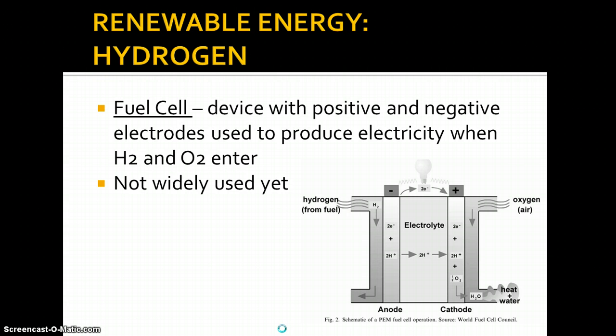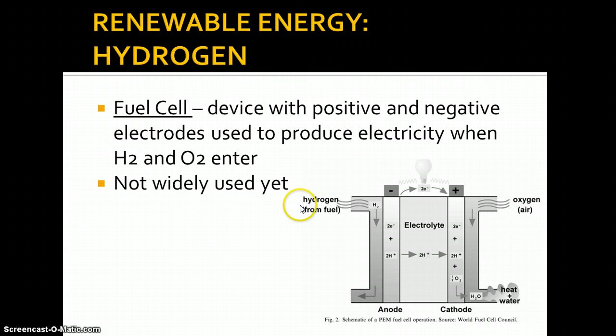With hydrogen, you have a fuel cell that is used. This is a device that has a positive and a negative electrode, and when you have — like I said — the separation of charge, then you have voltage.